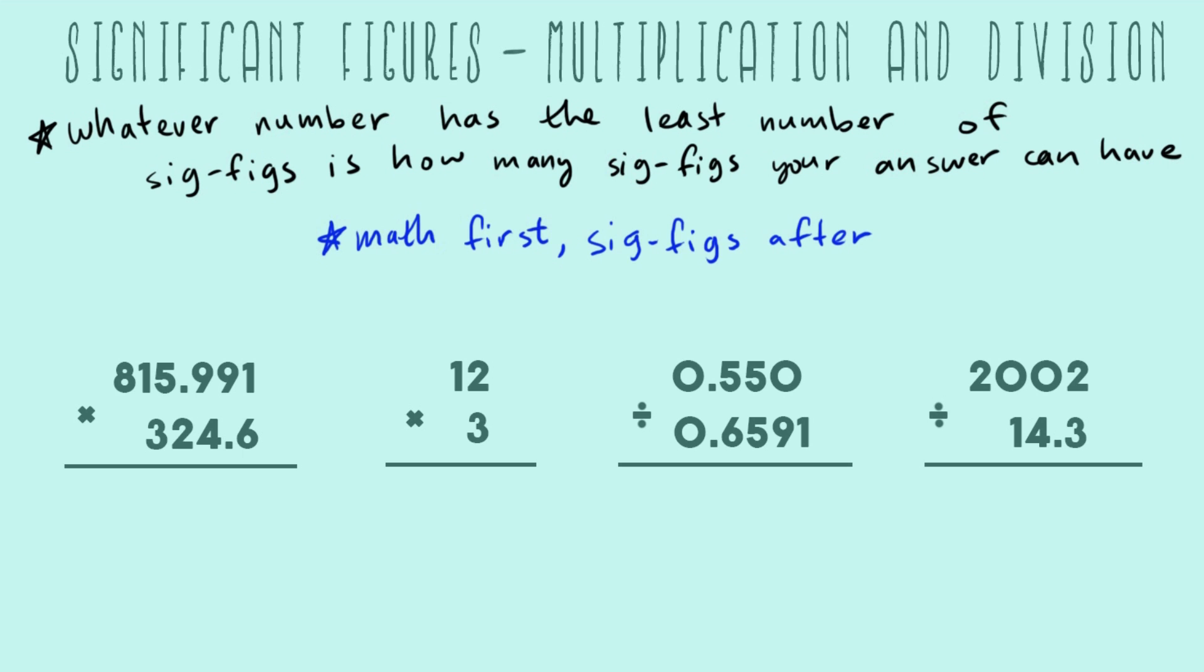If we plug this big multiplication problem into our calculator, we get 264,870.6786. Now that we have our answer, we have to apply our sig figs. That means we have to go back and check how many sig figs both our numbers had. In this problem it's pretty easy because everything is a non-zero, so everything's going to be a sig fig.